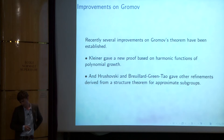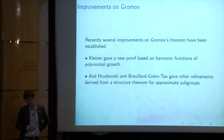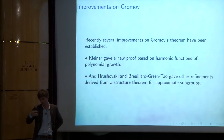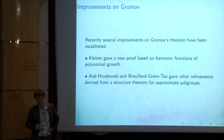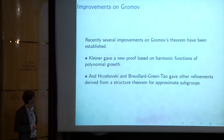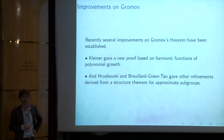Recently there have been several improvements on Gromov's theorem. Kleiner's proof was based on the study of harmonic functions of moderate growth, inspired by the work of Colding and Minicozzi on harmonic functions on manifolds. In another direction, there was work by Hrushovski and myself, and Green and Tao, where we gave a refinement of Gromov's theorem based on a structure theorem for approximate groups. My talk will be focused on this aspect and on some consequences of that theorem.